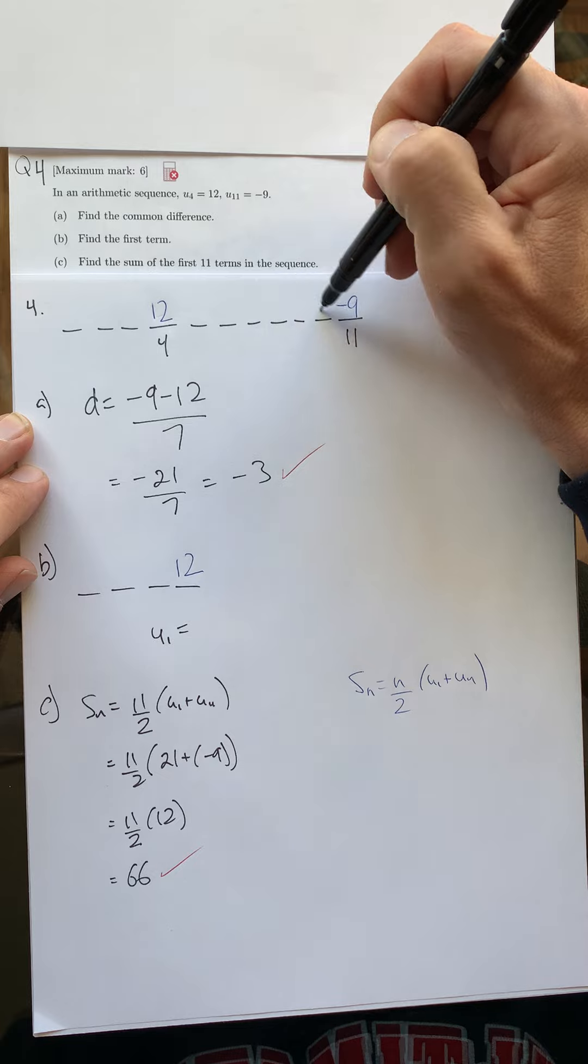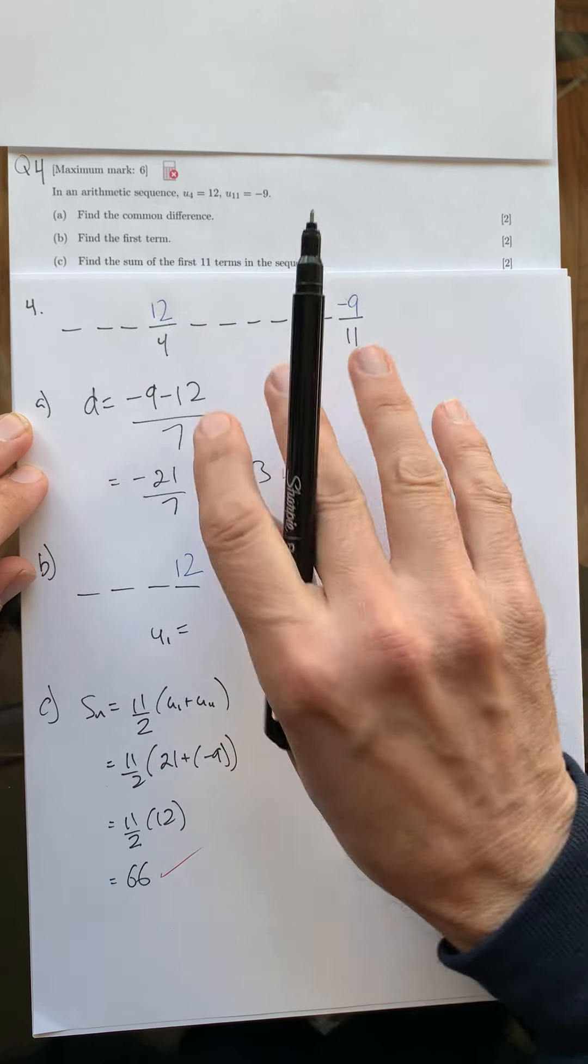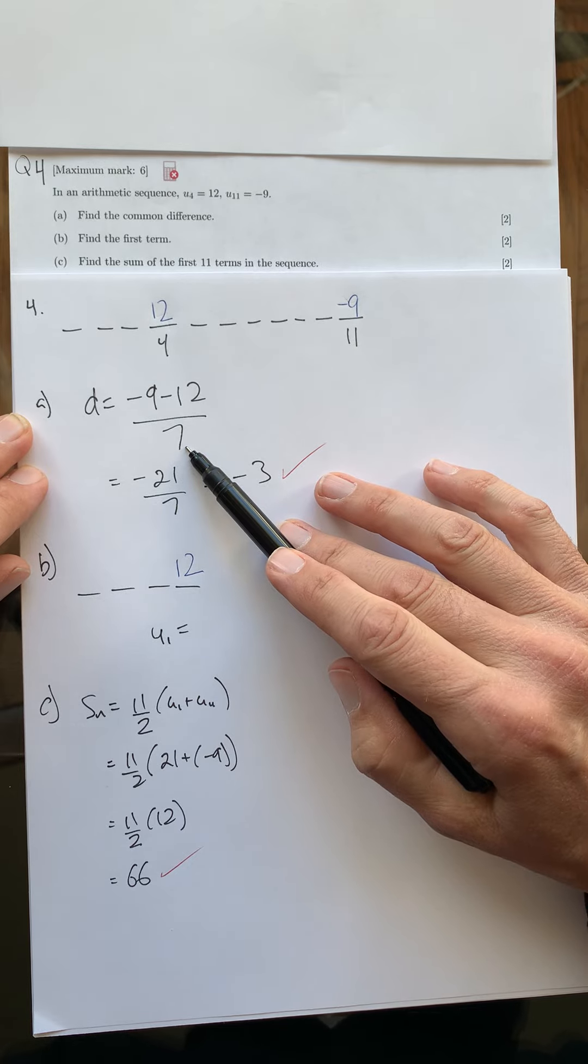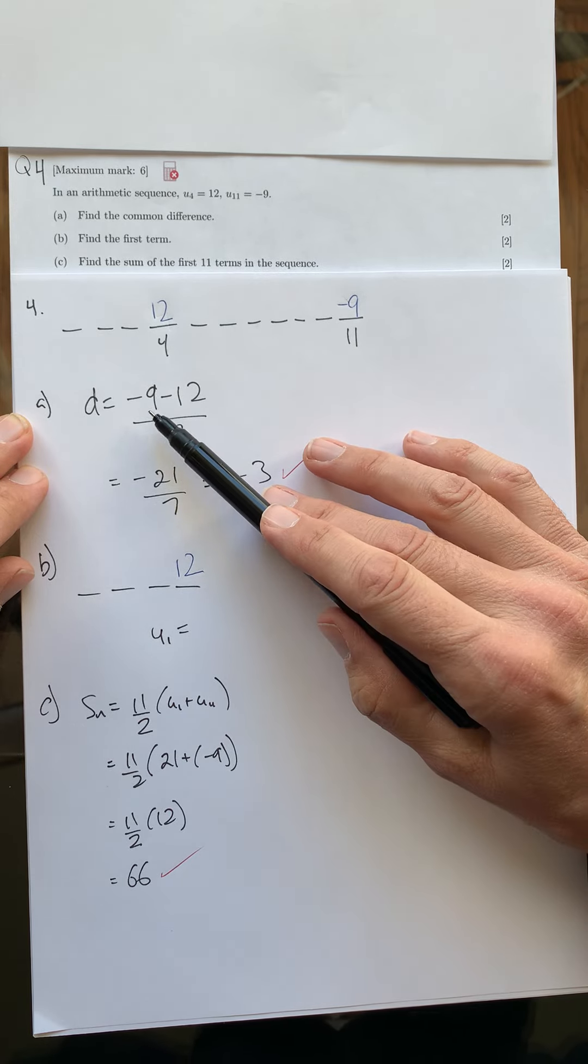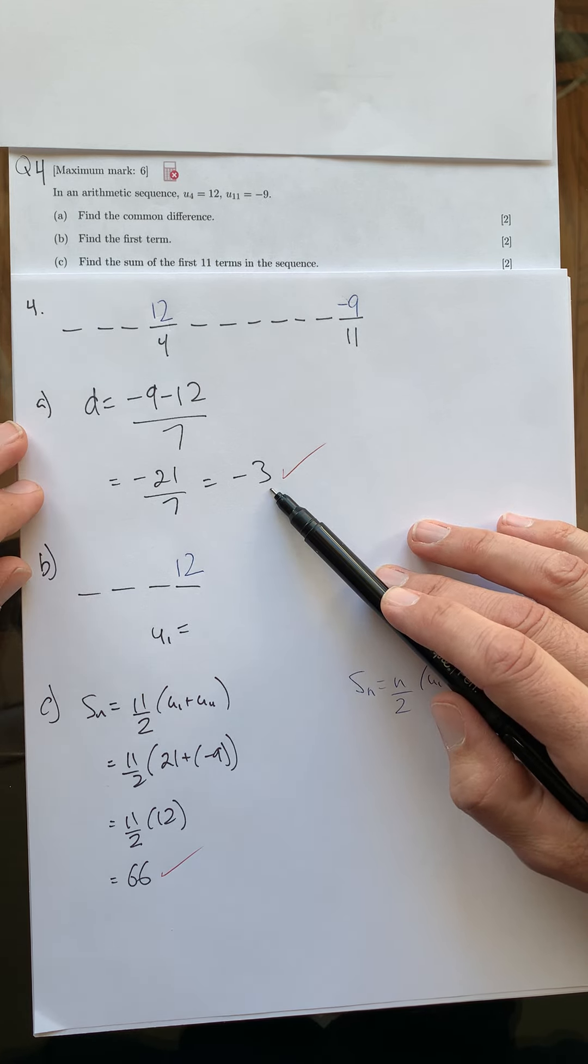So I have to divide that overall drop by seven steps. Negative 21—negative 9 take away 12 is negative 21—divided by 7 is equal to negative 3, which is correct.